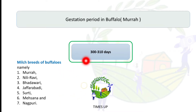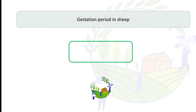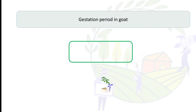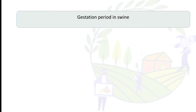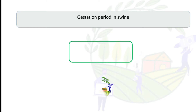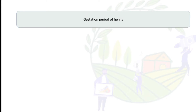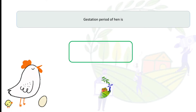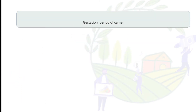The gestation period in sheep is 148 days, in goat it is 150 days, and in swine the answer is 3 months, 3 weeks, 3 days — that is 115 days. The gestation period in hen is 20 to 21 days.